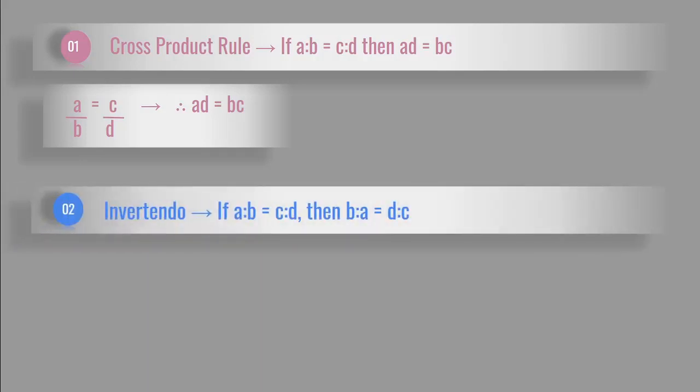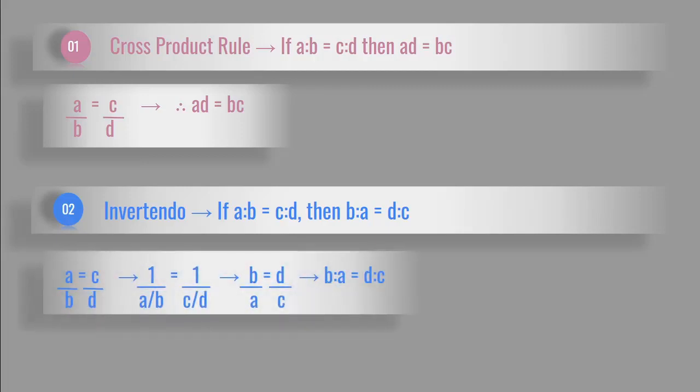Second, invertendo property. If A is to B is equal to C is to D, then B is to A is equal to D is to C. In the invertendo property, we take the inverse. So here A over B is equal to C over D. Taking inverse, we get B over A is equal to D over C. Therefore, B is to A is equal to D is to C.